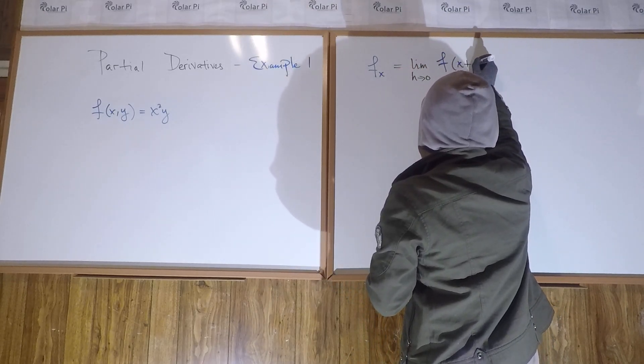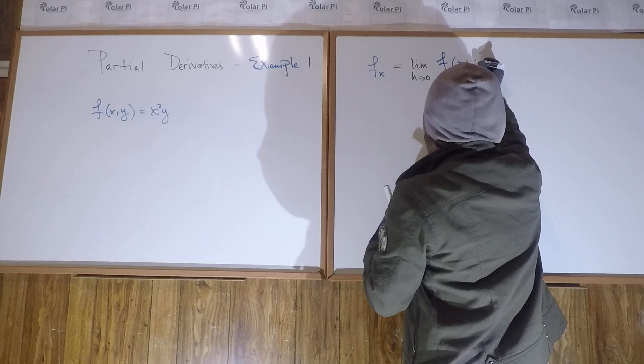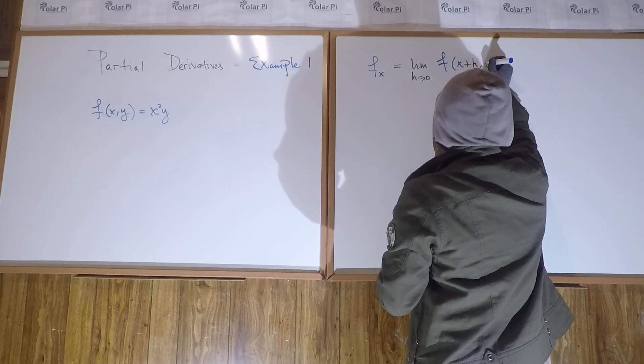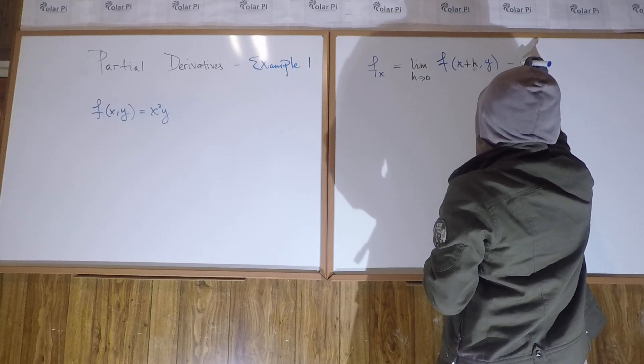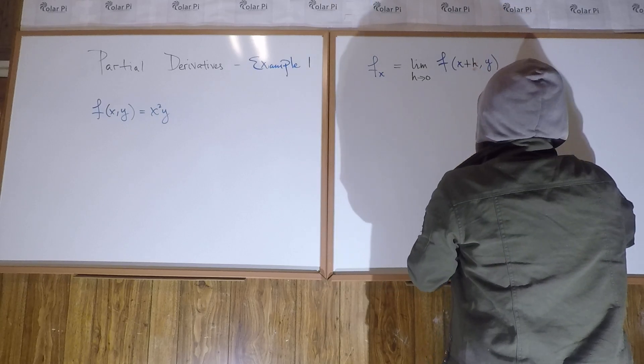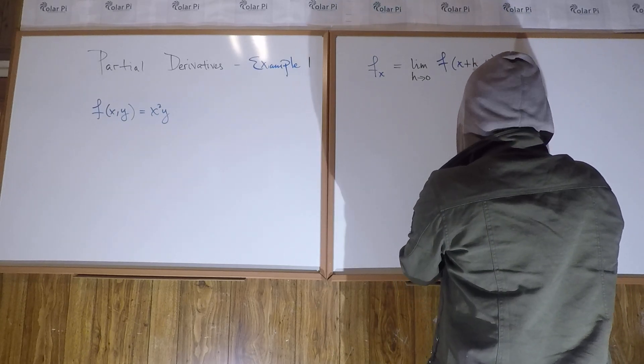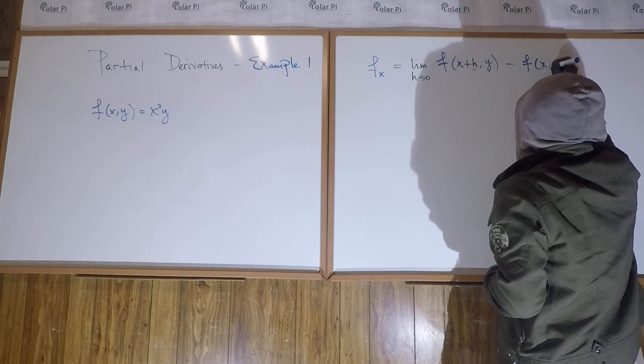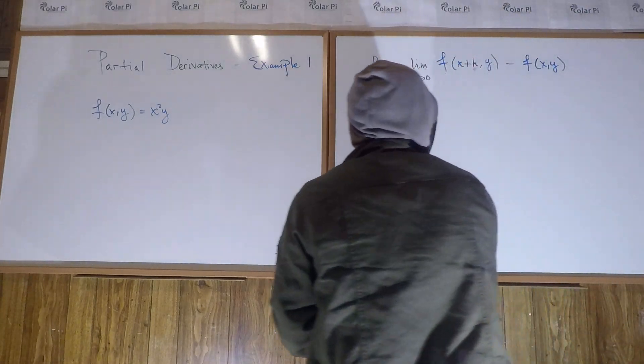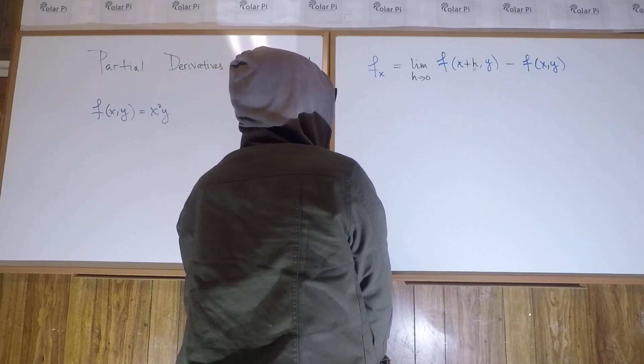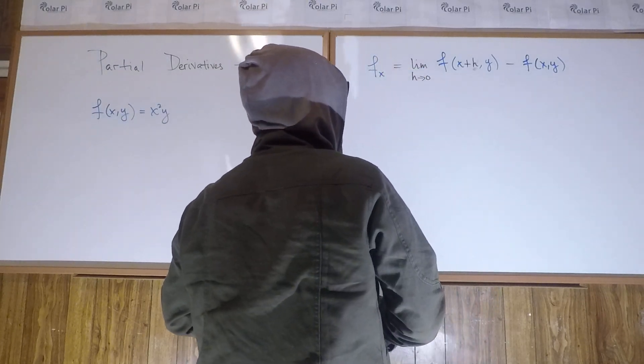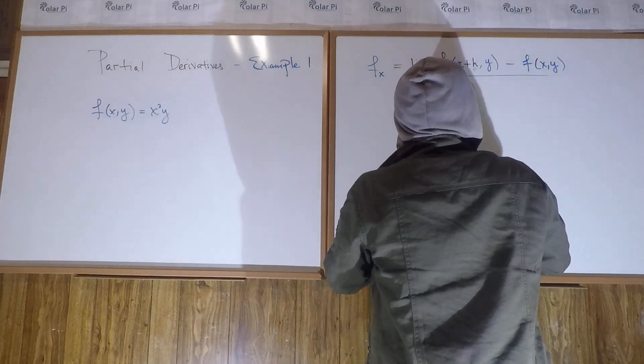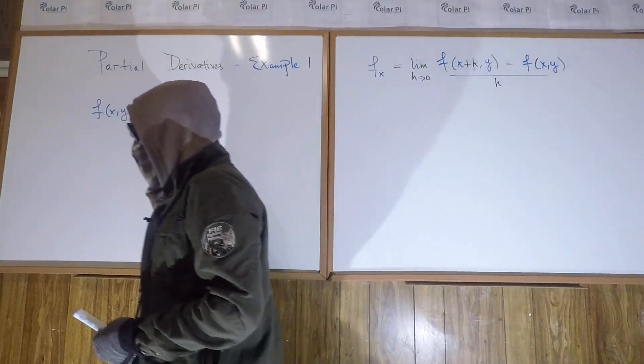the limit as h goes to 0 of f of x plus h comma y, and then minus f of x comma y. This is the only time I'll color code. And then you'll know who I am, and I don't want that to happen. All over h, right? This is the limit definition that we came up with.